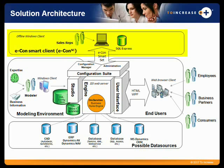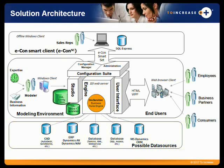On the highest layer we have our econ Smart Client, which is a remotely deployable Windows-based application for offline use. At the bottommost layer of this slide you have our possible data sources. Econ is very flexible — you can use multiple different data sources, from your CAD system and ERP systems like Dynamics AX and Dynamics NAV, to Access databases and even Excel files, which is quite unique for this market.